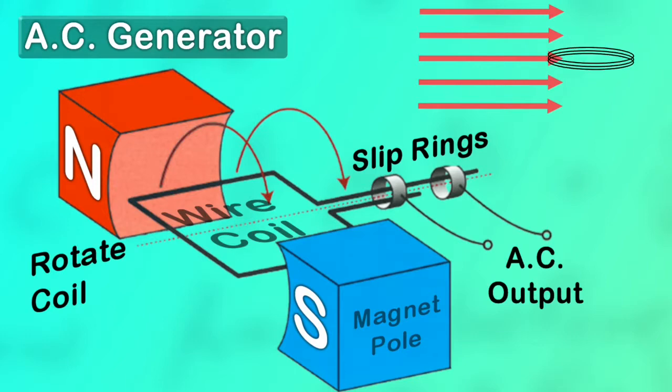If there are N turns on the coil and it has an area A, then we say that the maximum flux in that vertical position is going to be N times B times A, because phi for magnetic field going through an area is BA.